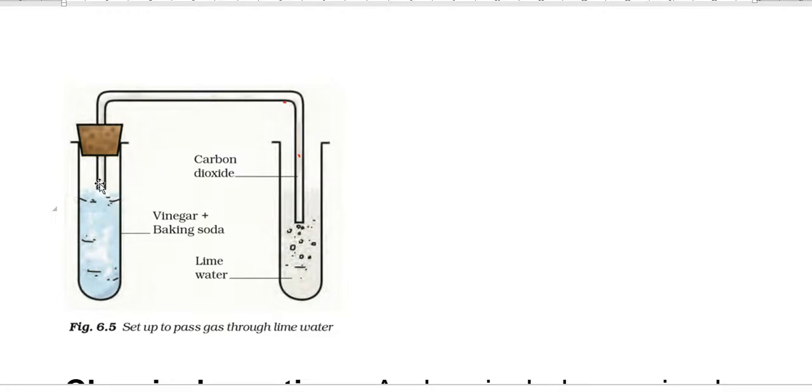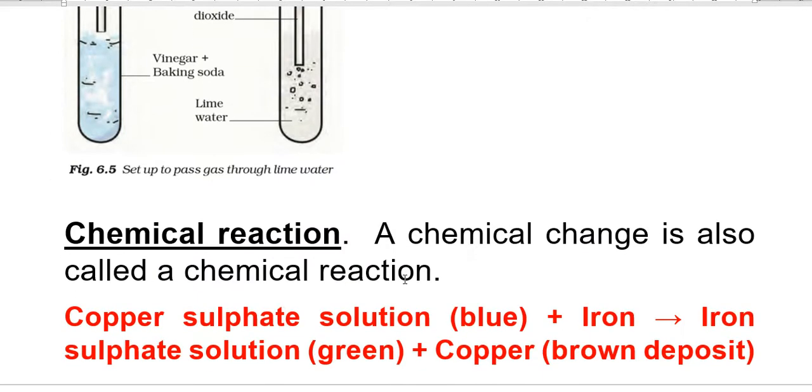The carbon dioxide passes through a small tube to another test tube where we add lime water. When carbon dioxide is added to lime water, a white substance forms called calcium carbonate. This reaction is also called a chemical reaction. Chemical change is also called chemical reaction.